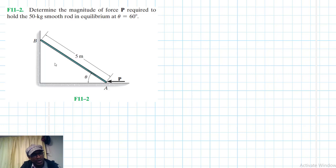Welcome to this screencast. The problem reads: determine the magnitude of force P required to hold the 50 kg smooth rod in equilibrium at theta equal to 60 degrees. This problem comes from Engineering Mechanics Statics textbook, 13th edition.